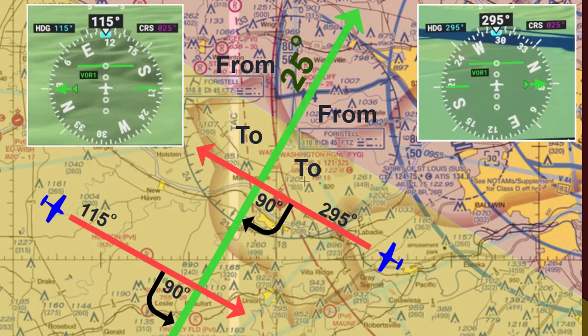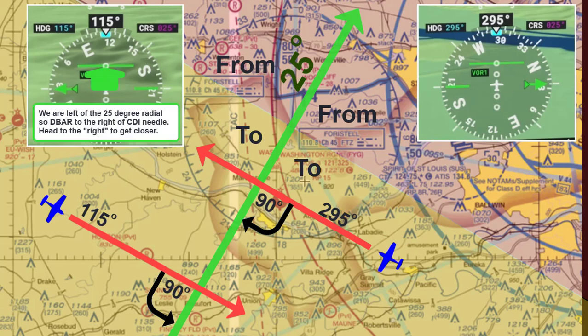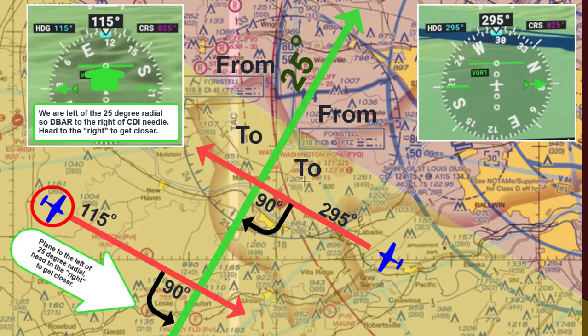On the flight heading east from Hermann, it is the opposite. As related to the 25-degree radial, the D-bar is offset to the right, so our aircraft is positioned on the left side of the 25-degree radial, or left of course. This means we have to navigate to the right to get closer to the radial. The heading I chose is 115 degrees, which again is 90 degrees to the course to get there the quickest.